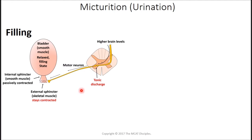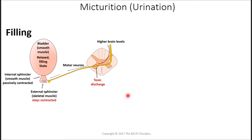During the filling phase — you're not urinating, you're drinking — the kidneys are concentrating urine and sending it through the ureter into the bladder. You fill up to a point where you start to feel too much pressure. Under those conditions, your motor neurons contract the external sphincter — that's volitional control. You can decide not to urinate because the internal sphincter is going to be passively contracted by the parasympathetic neurons. That's filling.